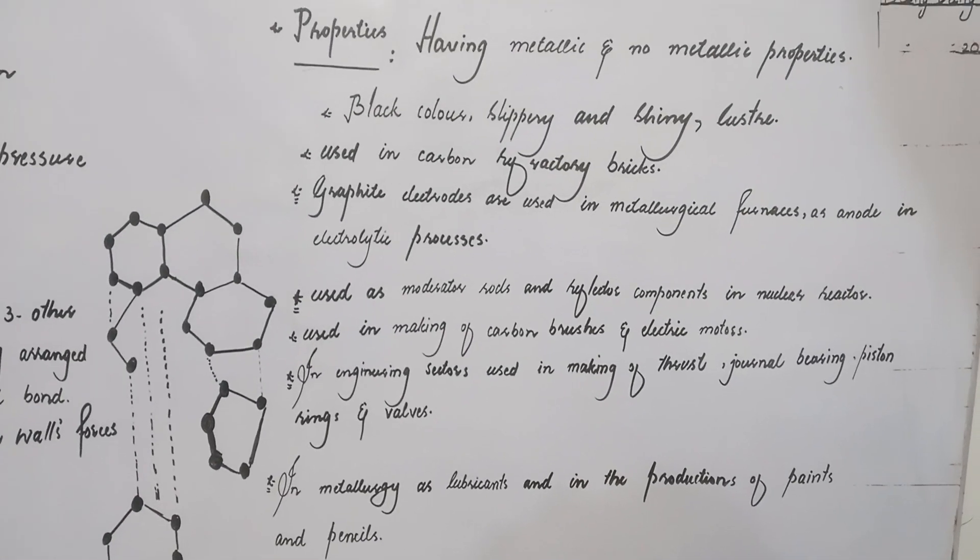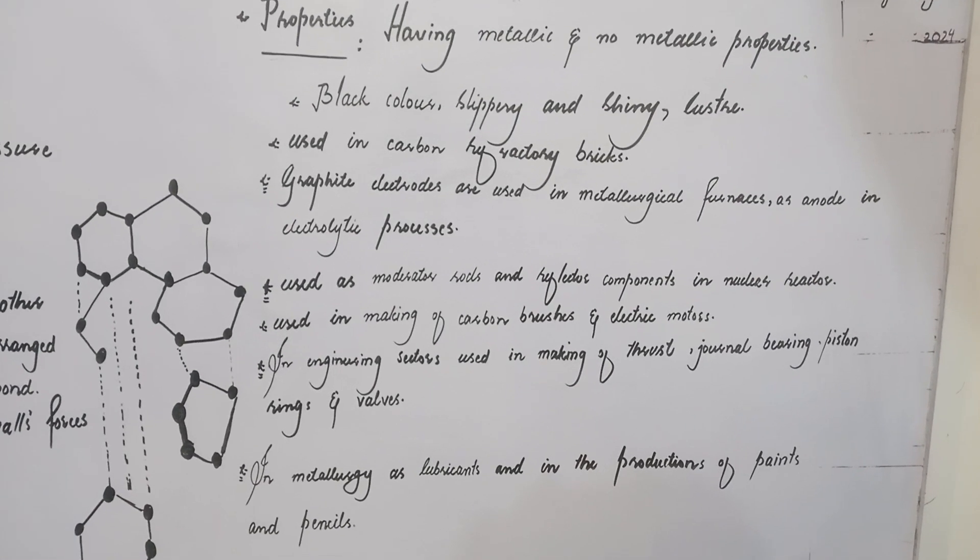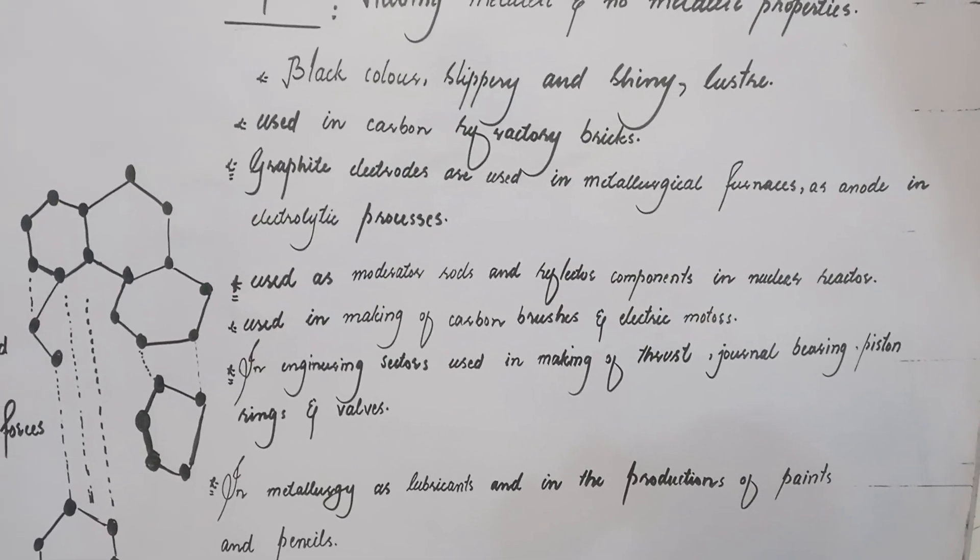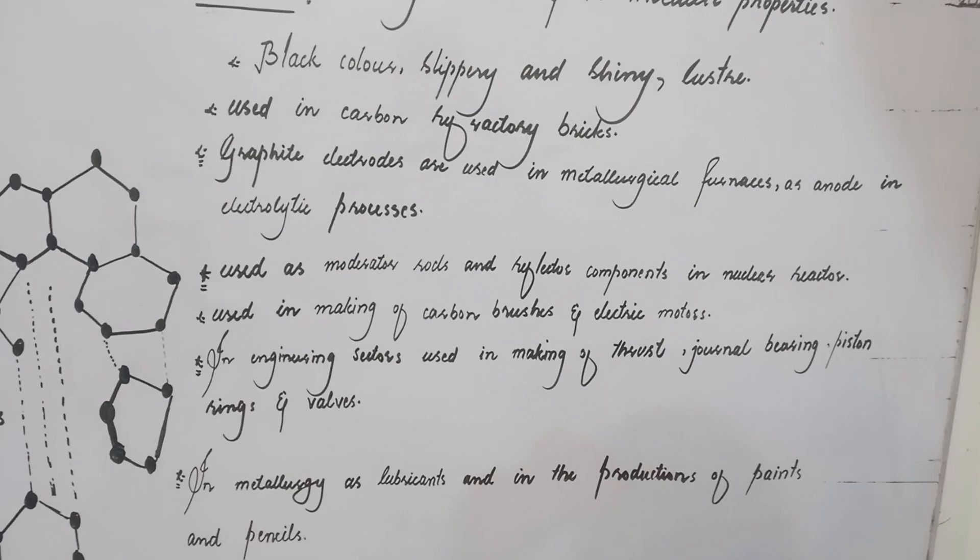Used in carbon refractory bricks. Graphite electrodes are used in metallurgical furnaces as anode and electrolytic processes.